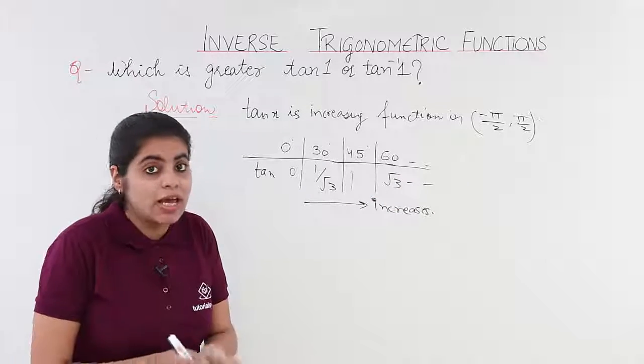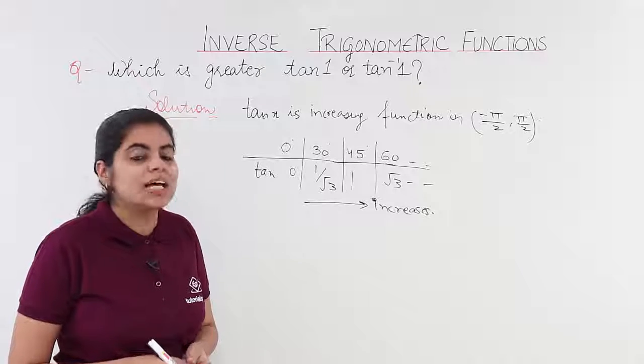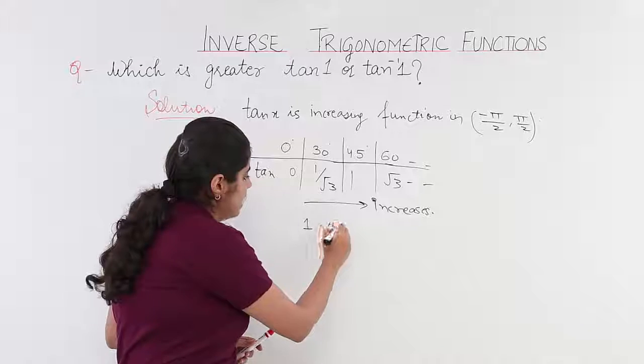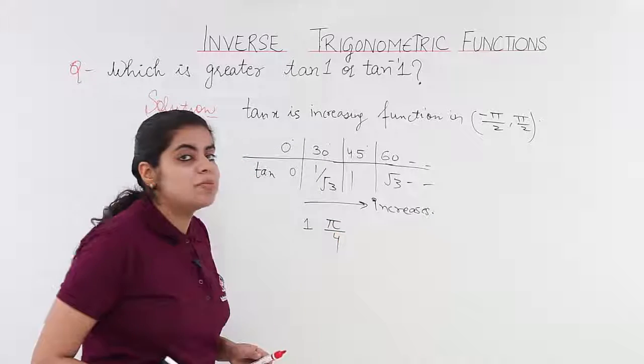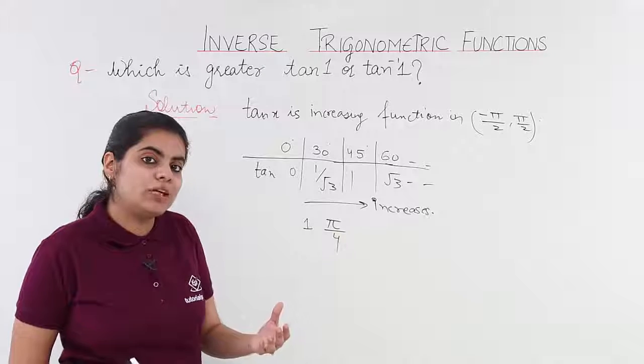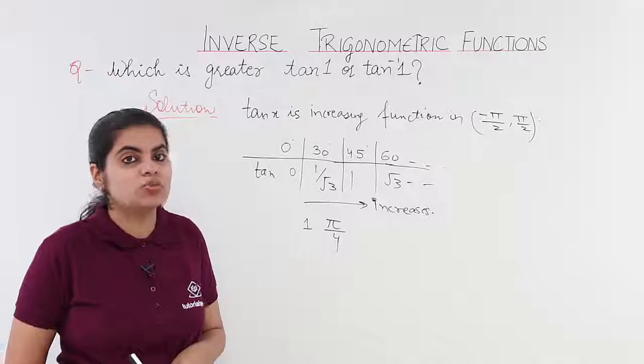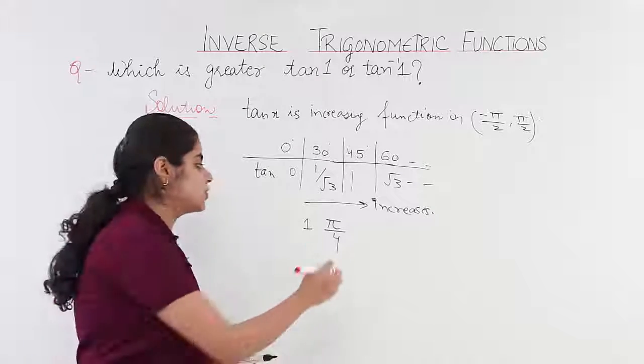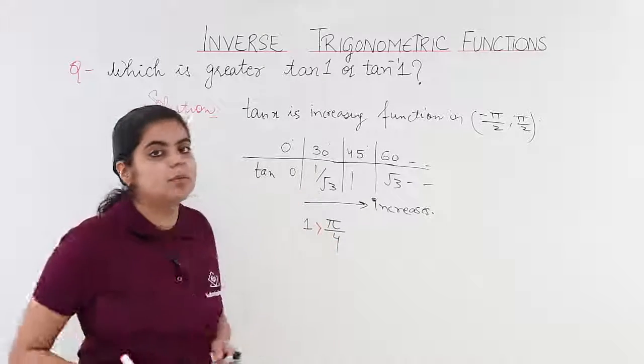So, from this knowledge and also from one more knowledge that 1 and pi by 4. How do you compare these? Pi is basically 22 upon 7 and 22 upon 7 into 4 means 22 upon 28 which is less than 1. So, 1 and pi by 4 will have the relation that 1 will be greater than pi by 4.